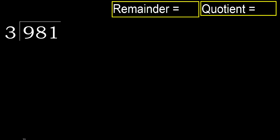981 divided by 3. Starting with 9 — 3 multiplied by which number is nearest to 9 but not greater? 3 multiplied by 4 is 12, which is greater. So multiply by 3: 9 is not greater. Subtract 9 minus 9 equals 0.